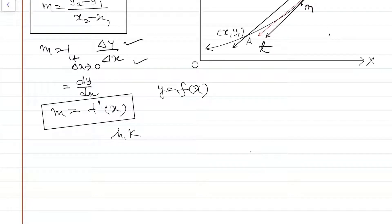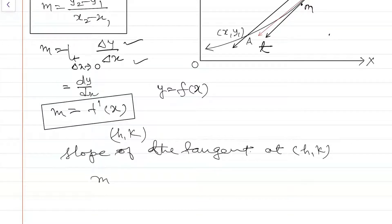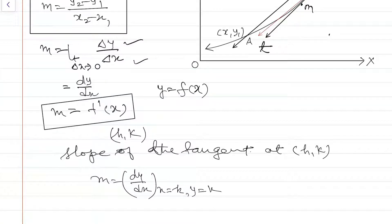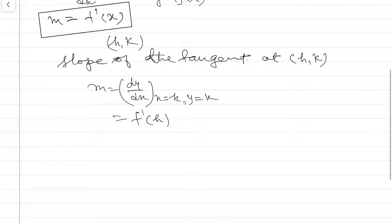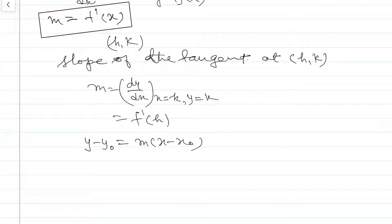Suppose we have a point (h, k) and we have to find the slope of the tangent at (h, k). It will be equal to m = dy/dx evaluated at x = h and y = k, or f'(h). Using the equation y - y0 = m(x - x0), we can find the equation of the tangent at a given point using the derivative.